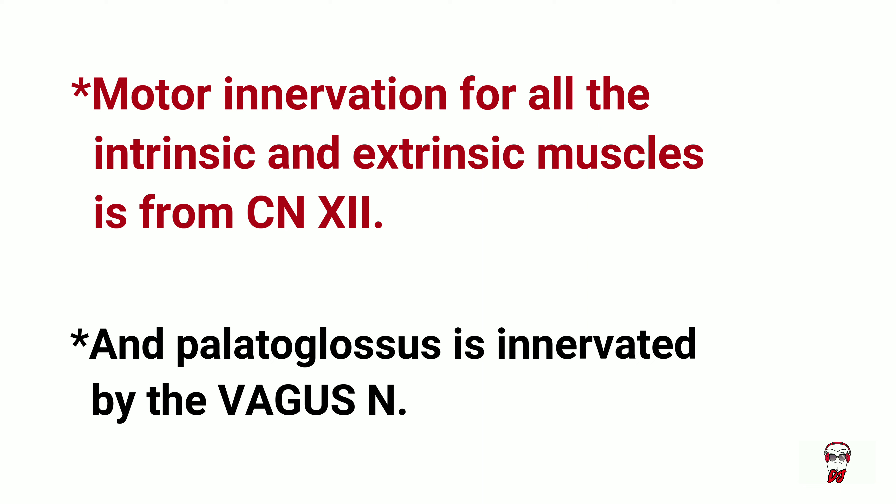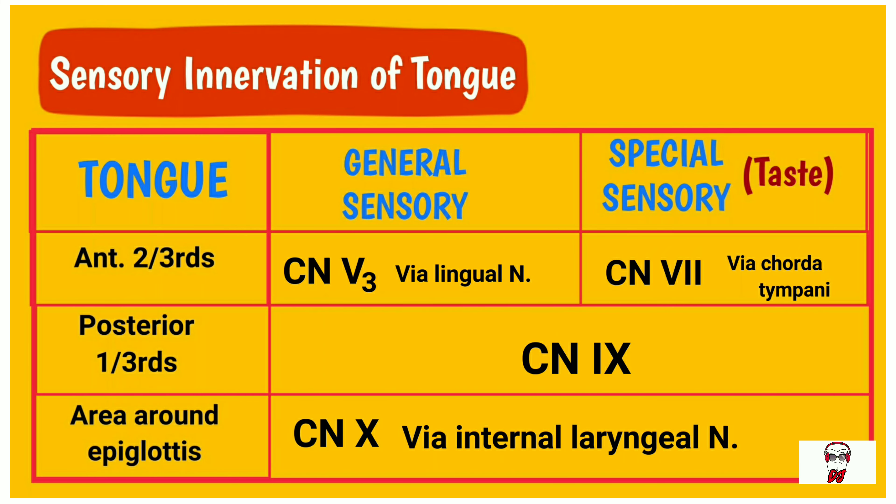Now that we know the motor innervation of the muscles of the tongue is by the hypoglossal nerve, and the vagus nerve for the palatoglossus muscle, let's look at sensory innervation. Dividing the tongue into the anterior two-thirds and posterior one-third: in the anterior two-thirds, general sensory innervation is through the mandibular nerve, a branch of the trigeminal nerve, via the lingual nerve. Special sensory, which is taste, is supplied by the facial nerve through the chorda tympani.